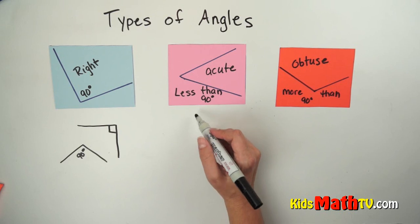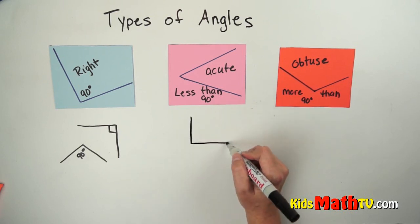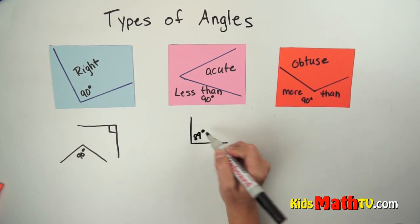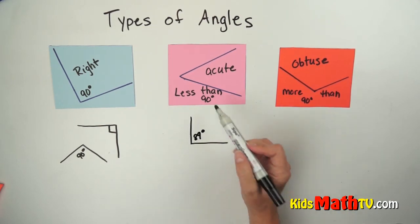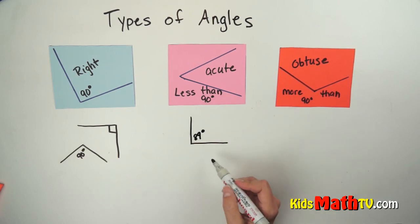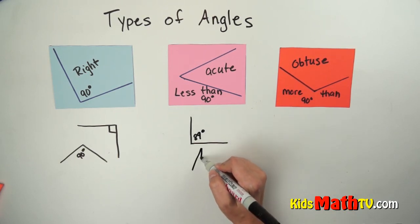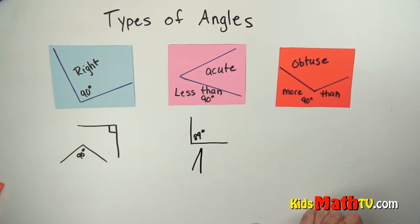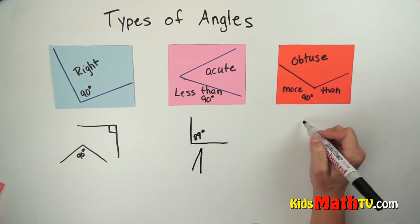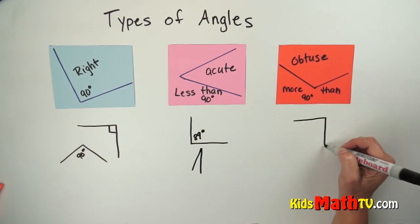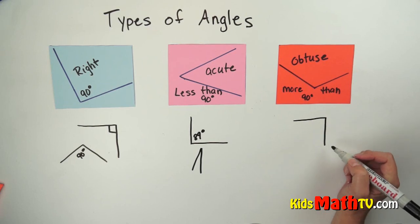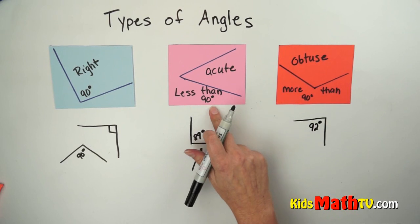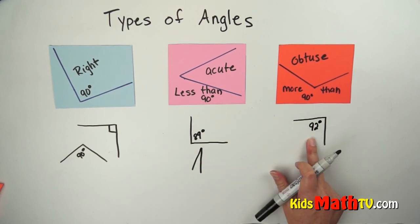An acute angle is anything less than 90 degrees. So this might look like a 90 degree angle, but if I label it 89 degrees then it is an acute angle because it is less than 90 degrees. I can have angles going this way — this is definitely less than 90 degrees so it is also an acute angle. This one also looks similar to a right angle, but if I said this was a 92 degree angle it is greater than 90 degrees so it is an obtuse angle.